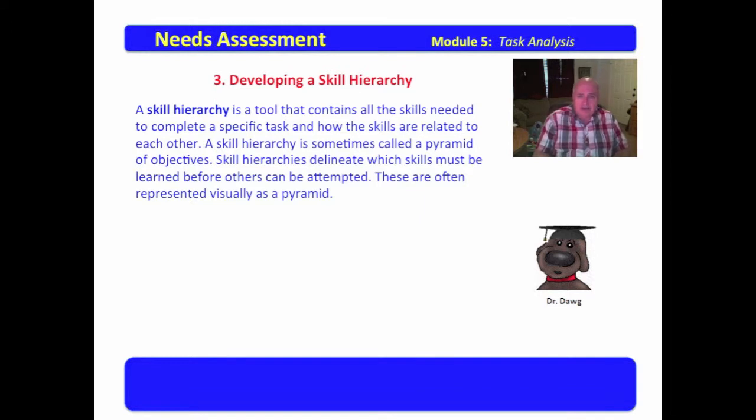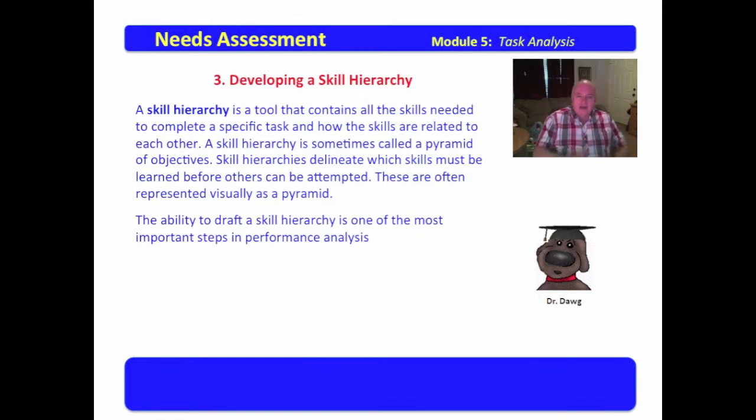Some of you may remember having seen Maslow's hierarchy of needs drawn out as a pyramid, which starts with the things you have to have. You have to have food, shelter, air. And then you move on up the pyramid towards the other things. The ability to draft a skill hierarchy is one of the most important steps in performance analysis. If we're going to analyze performance, we must know what skills are necessary in order to perform a specific task.